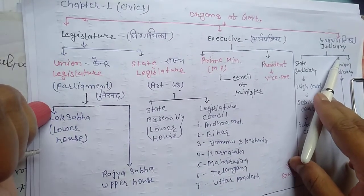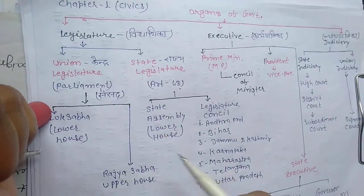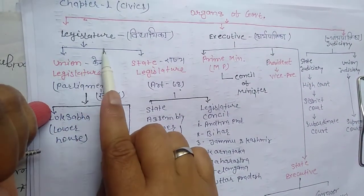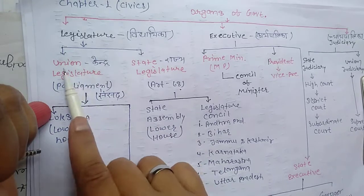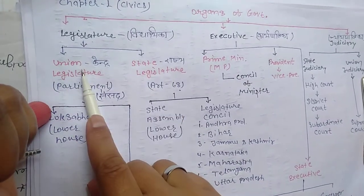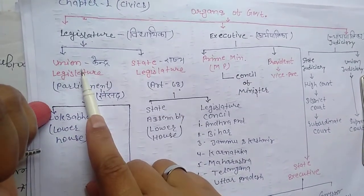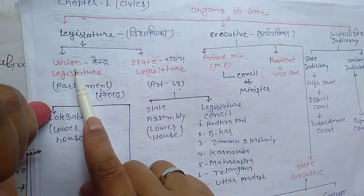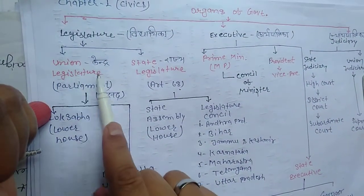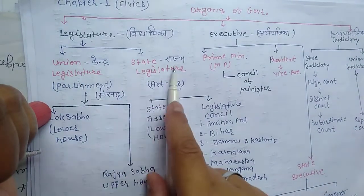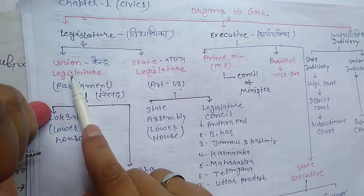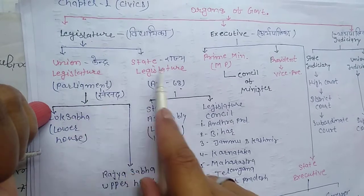Okay students, now let's see Legislature. Legislature is in two parts: Union Legislature and State Legislature. Union means central — in your book, union is explained. So Legislature is in two parts: Union Legislature and State Legislature.